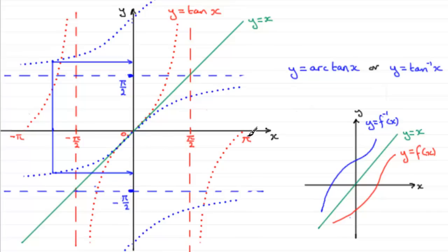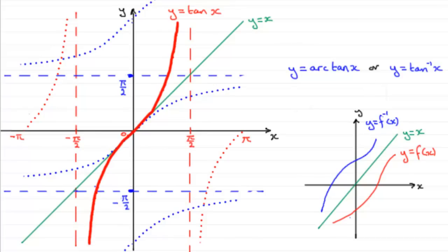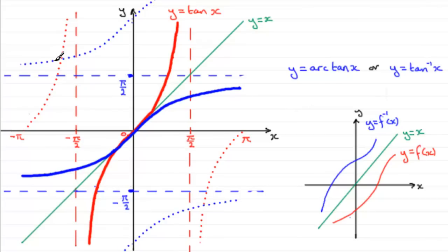I've got to restrict the domain in order to get a one-to-one function. If I restrict the domain between minus pi upon 2 to pi upon 2 for y equals tan x, then we get a graph looking like this — we can miss out these dotted parts. So when I reflect this part of y equals tan x in the line y equals x, what I get is this. For any value of x now in the domain, we just have this one value across here. Take any value of x, come up, and I just get the one value of y in the range.